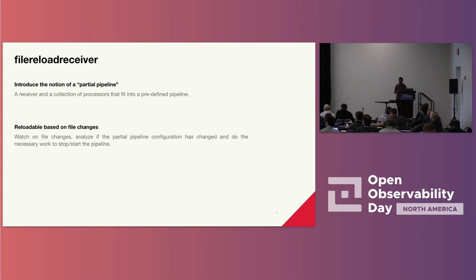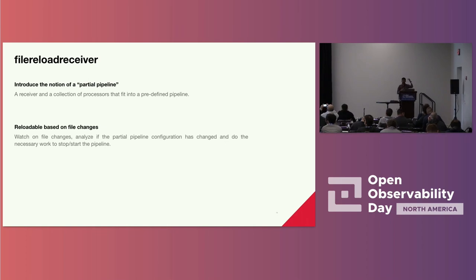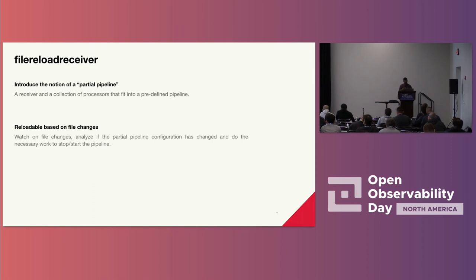To address the configuration reload problem, we introduced an internal receiver called the file reload receiver, which takes a partial pipeline definition specifying a receiver and associated processors, plugging into a standard set of processors and an exporter. This mimics the exact reloading feature that Beats has and brings the same capability into OpenTelemetry Collector. The receiver watches all file changes for configurations being added and removed, stopping or starting those partial pipelines, and updating on changes. We have been running it inside eBay for a while and are now at a point where we're comfortable working with the community to see if it can be accepted into the Contrib repository.